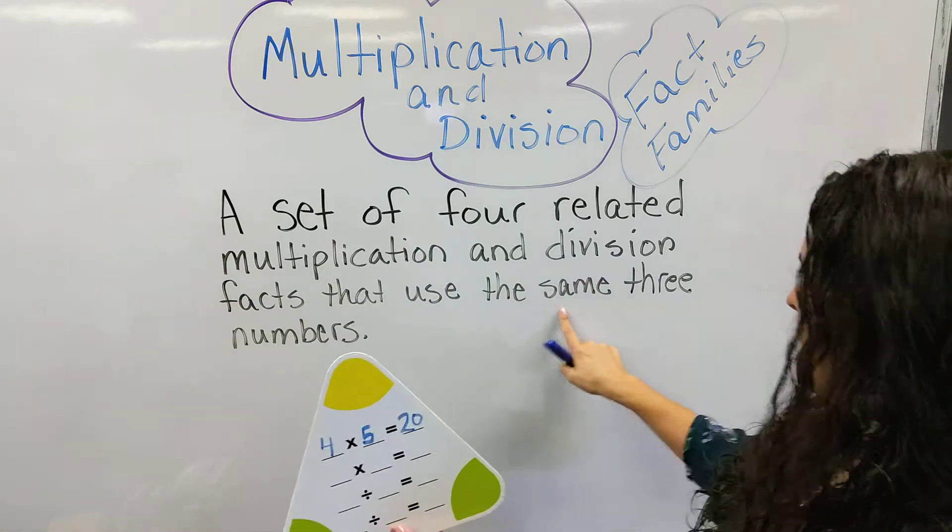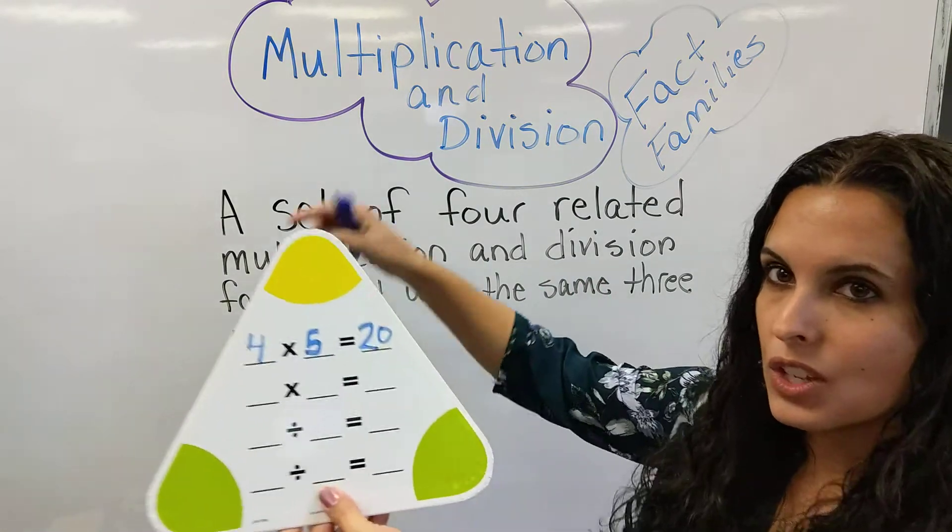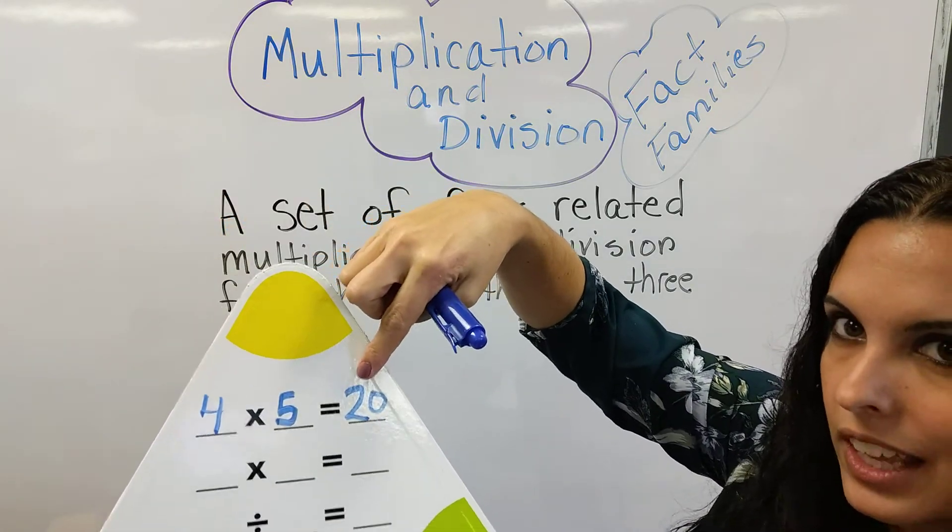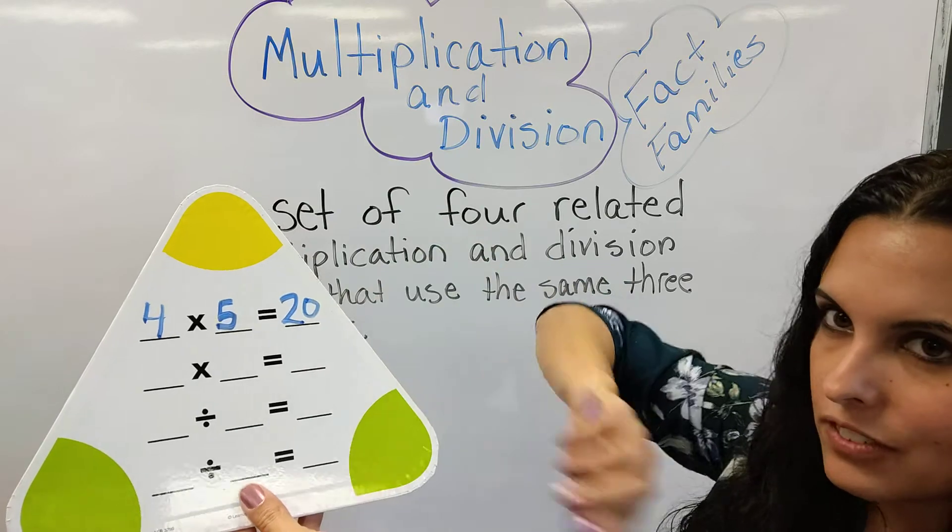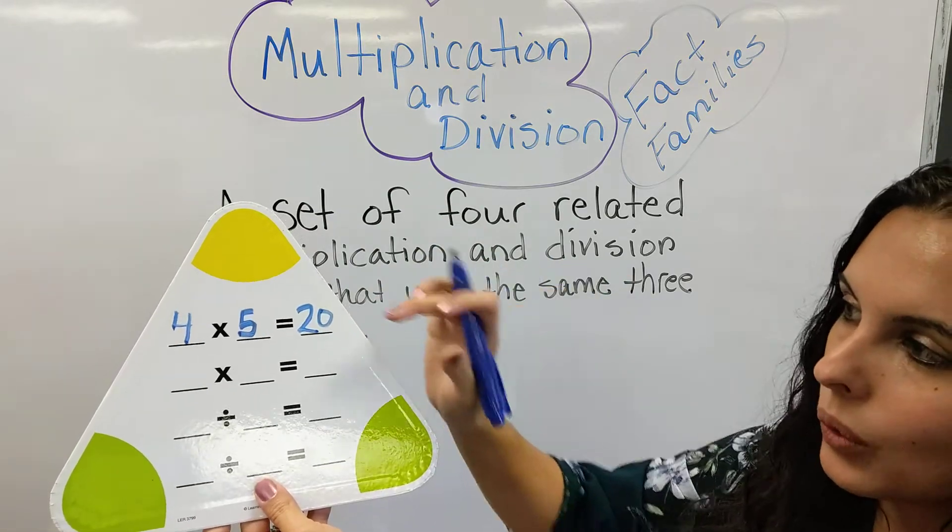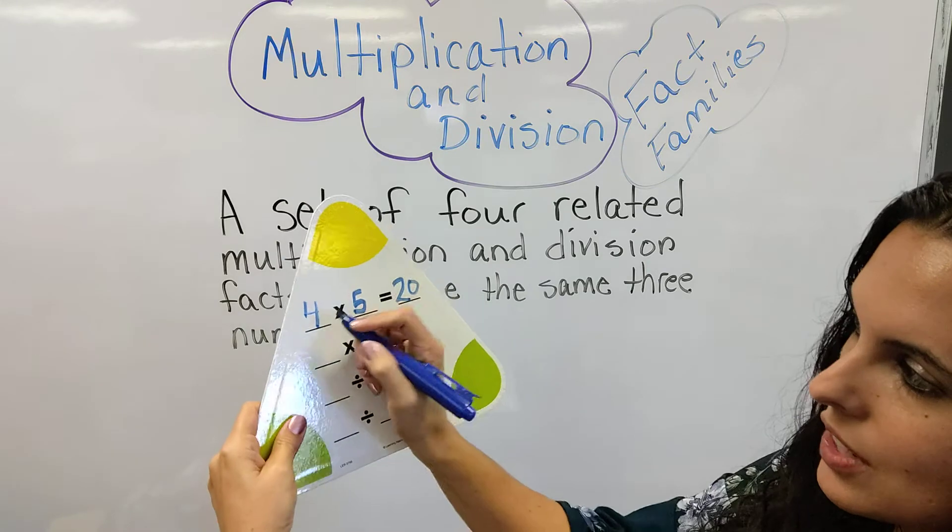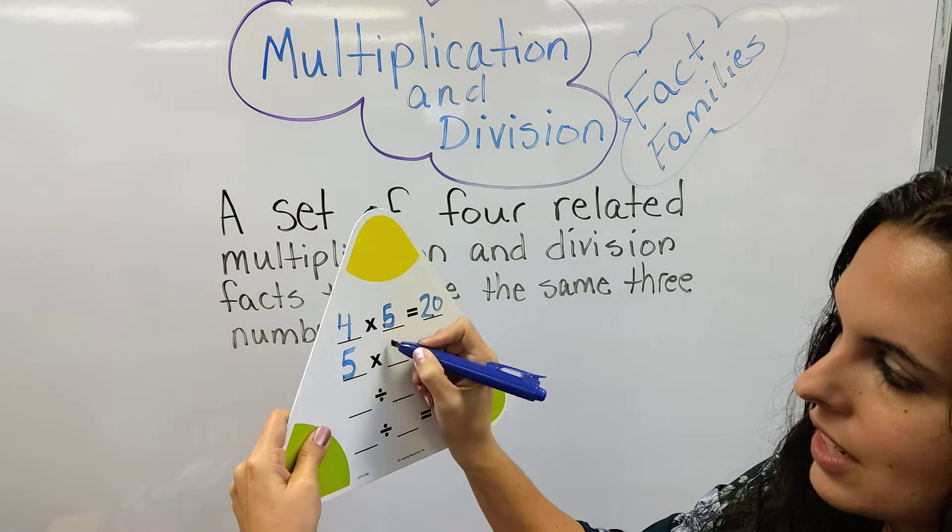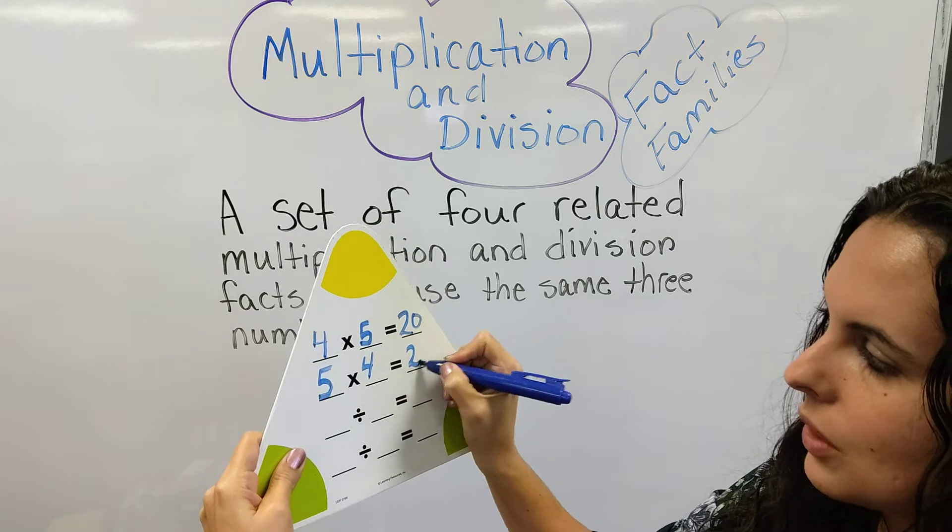Now we're using the same 3 numbers. So we've already got 4 and 5 and the answer is 20. So the rest of the fact family house is going to use the same 3 numbers. So the 4 is now going to trade over here and the 5 is going to go here. So 5 times 4 also equals 20.